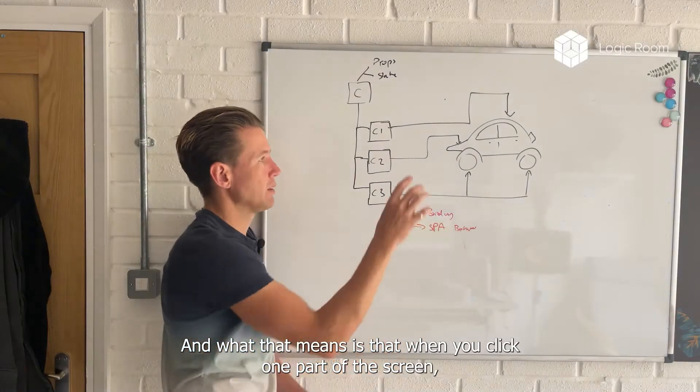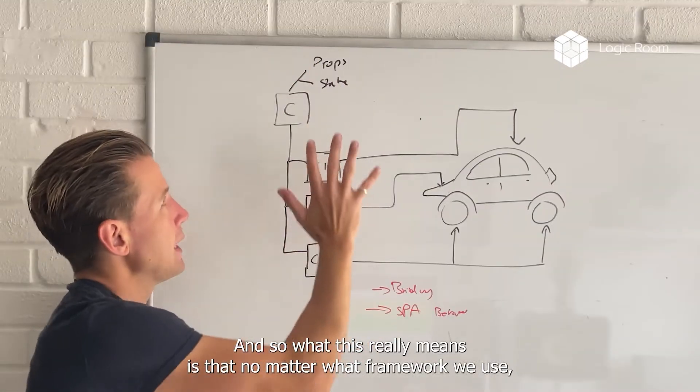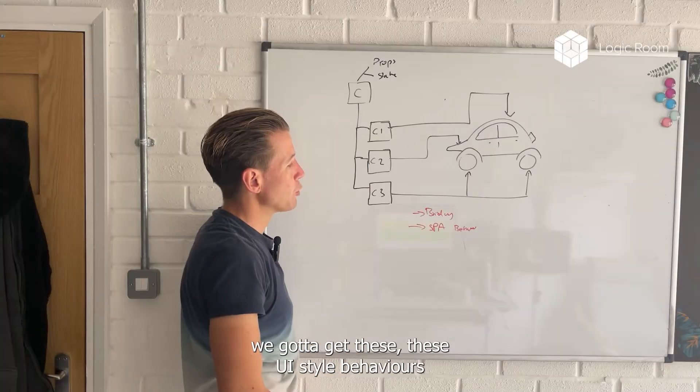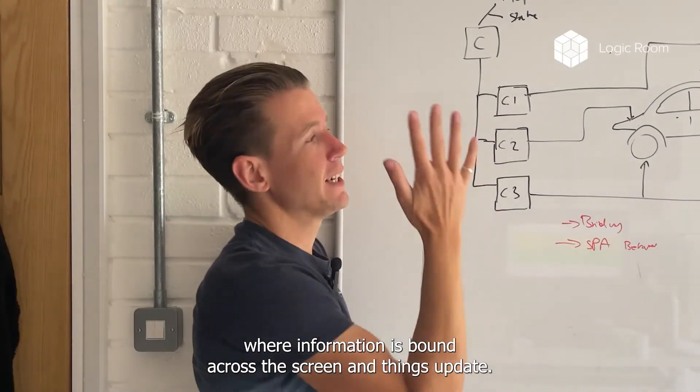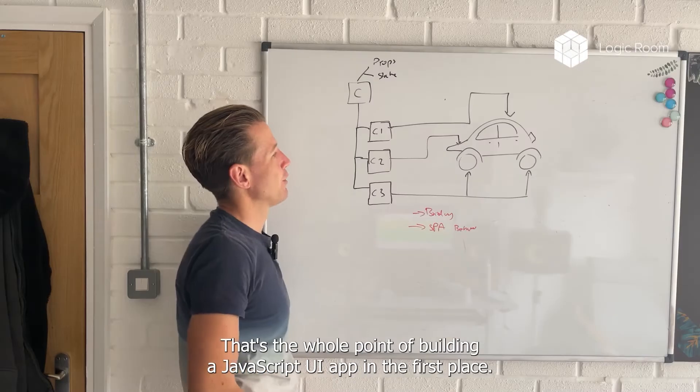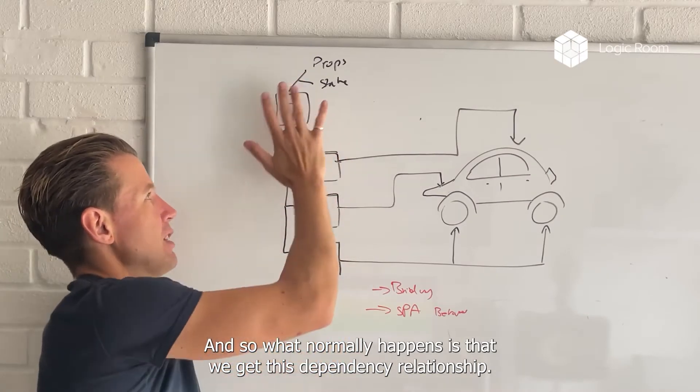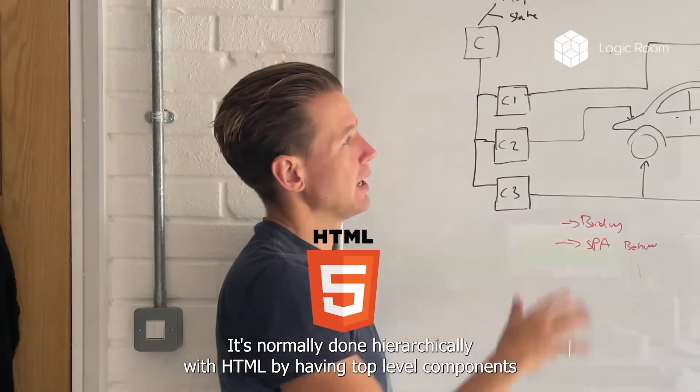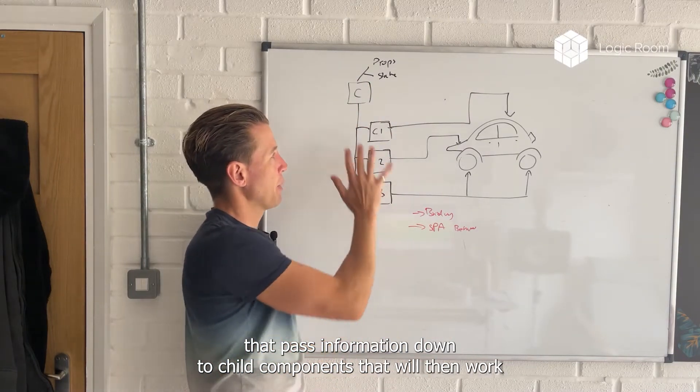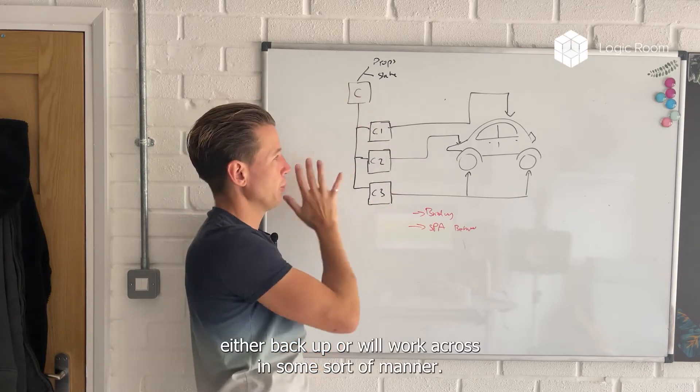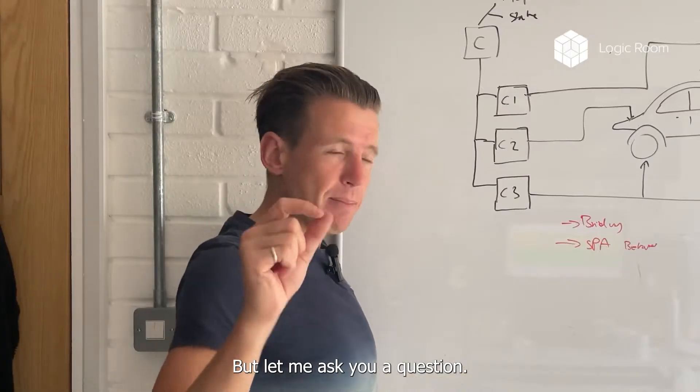And what that means is that when you click one part of the screen, something else updates, data updates and state updates. So no matter what framework we use, we've got to get these UI style behaviors where information is bound across the screen and things update. That's the whole point of building a JavaScript UI app in the first place. What normally happens is we get this dependency relationship done hierarchically with HTML by having top level components that pass information down to child components. The point is that that relationship exists.